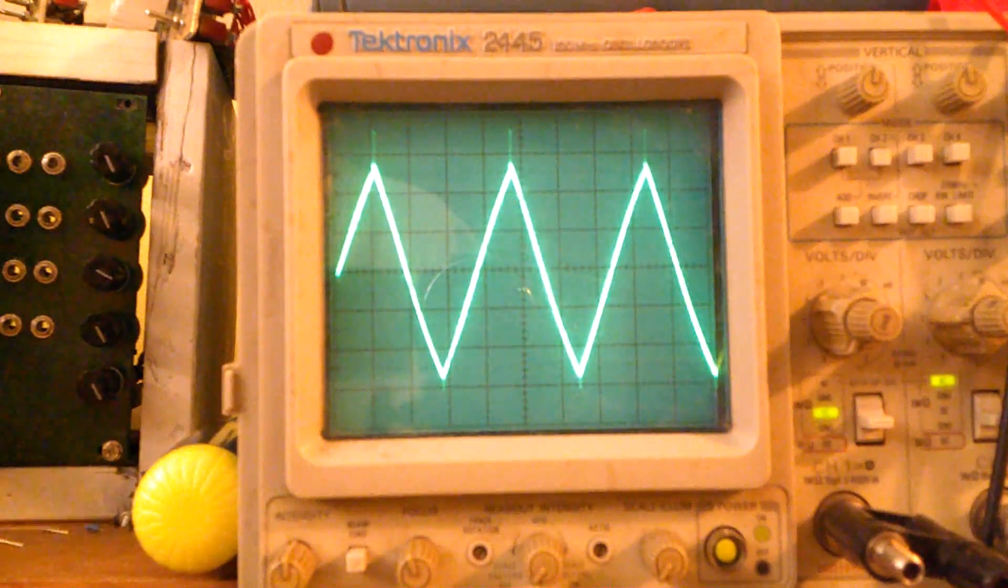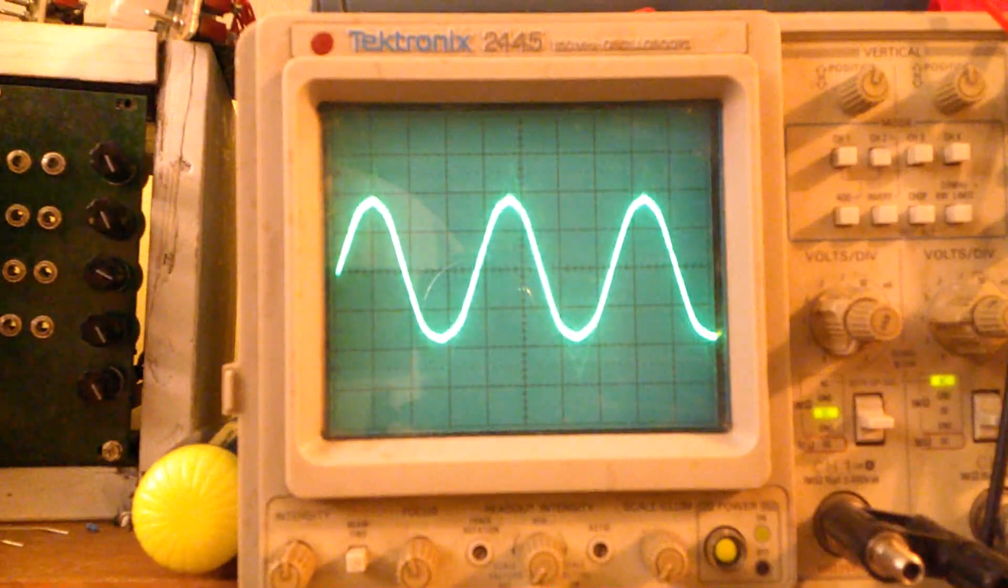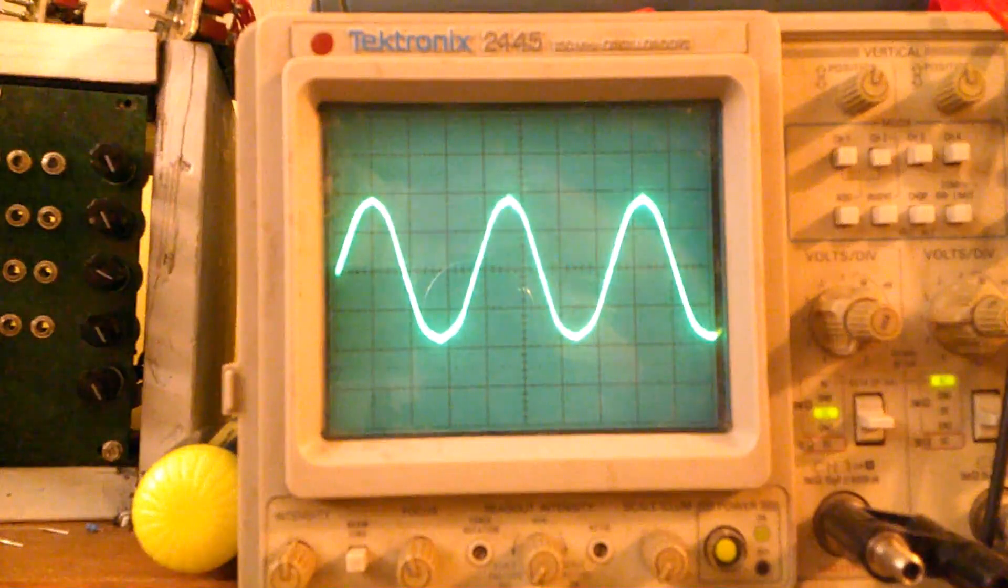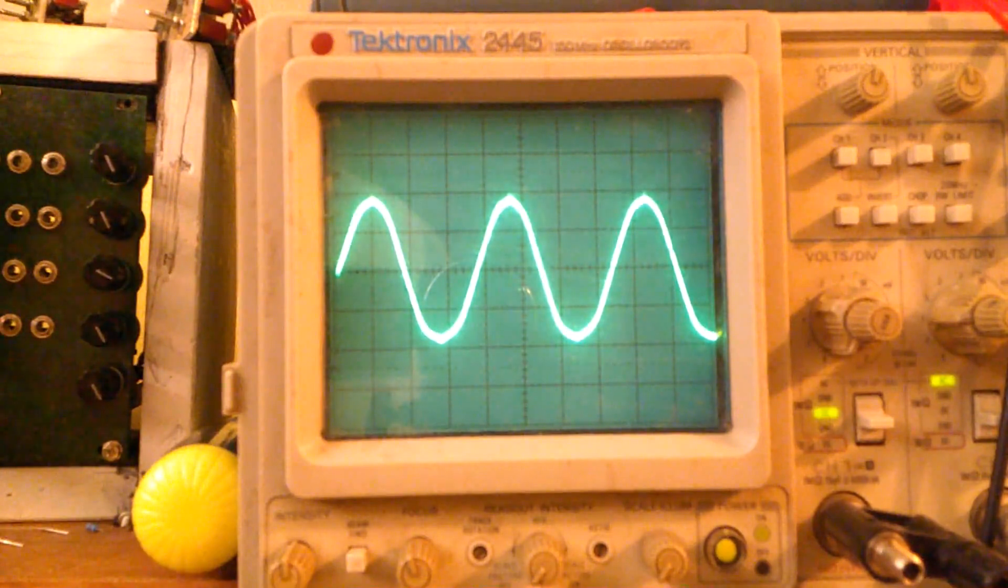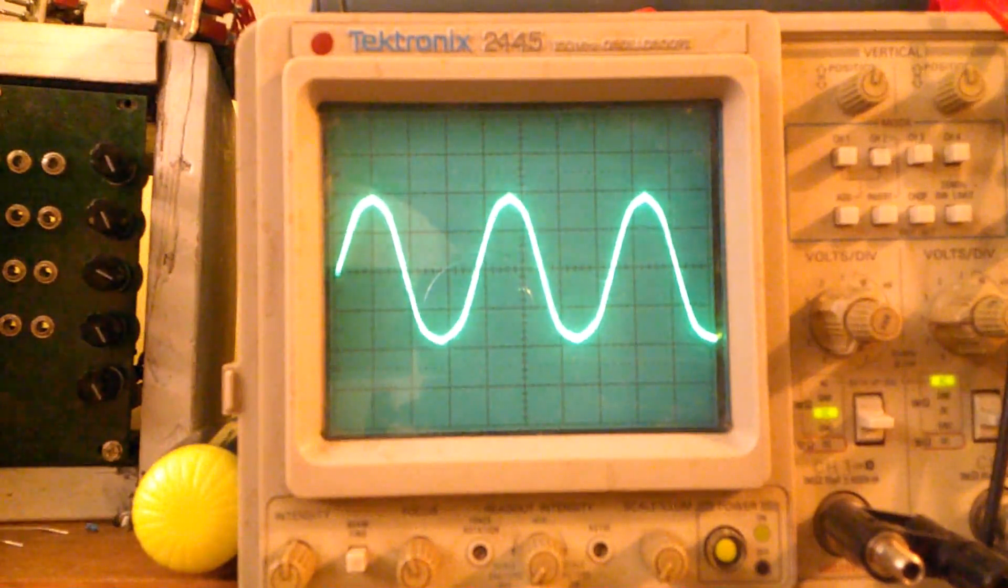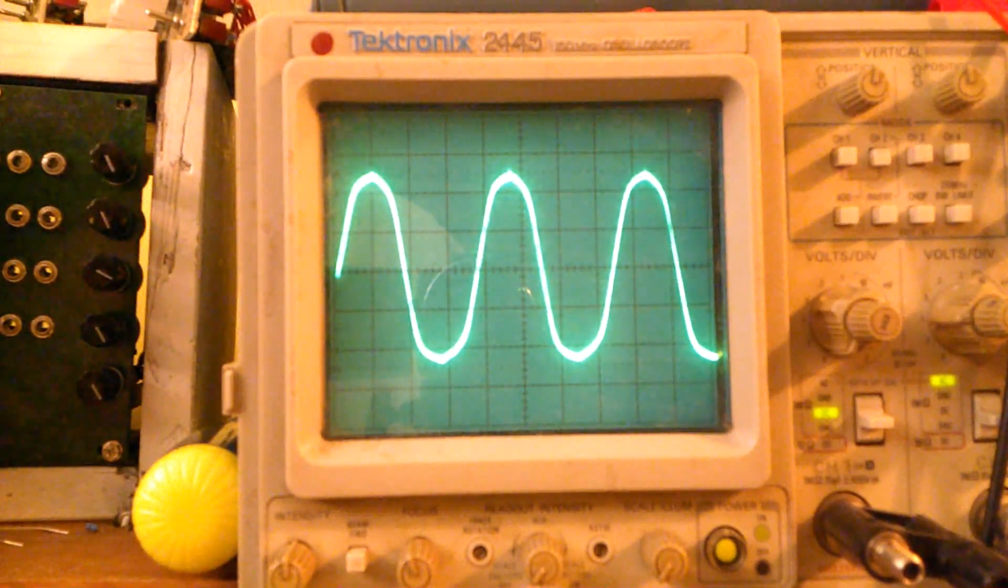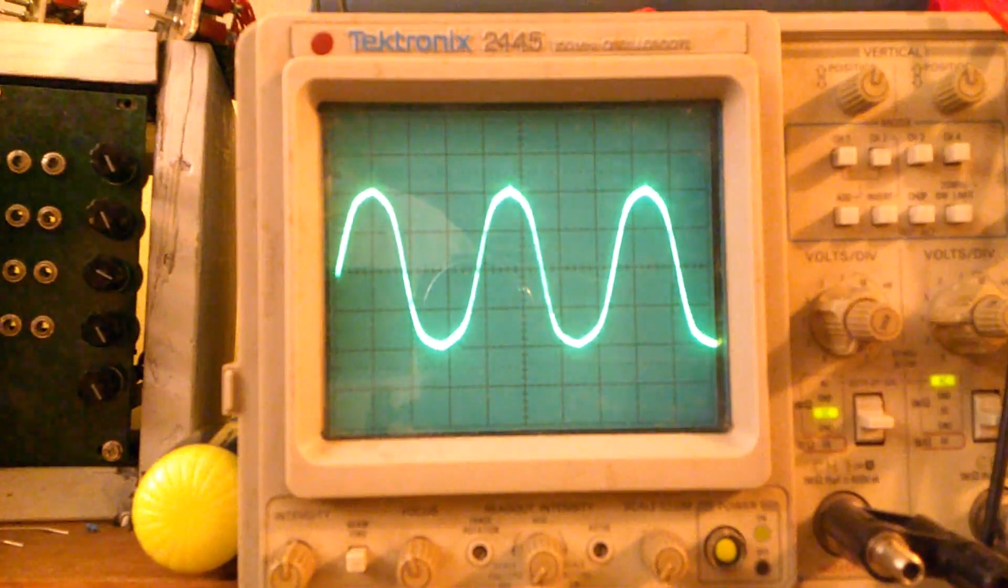So I'm going to now turn the Zener feedback on, and you can see it's now like crushing it down and making it this smoother, more sinusoid shape from a triangle. So right away we can turn this into sort of a sine shaper for triangles.